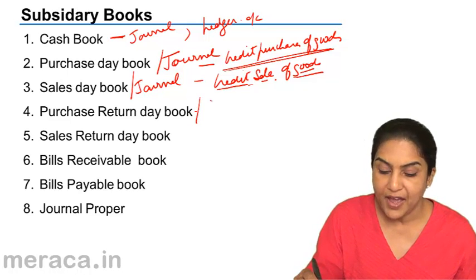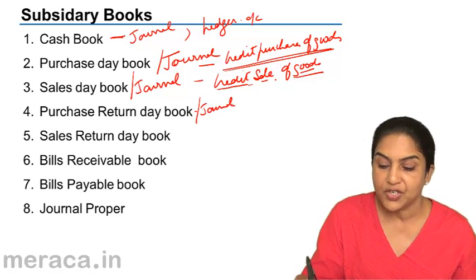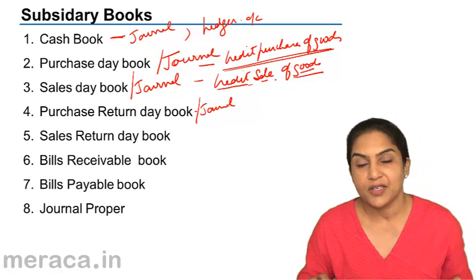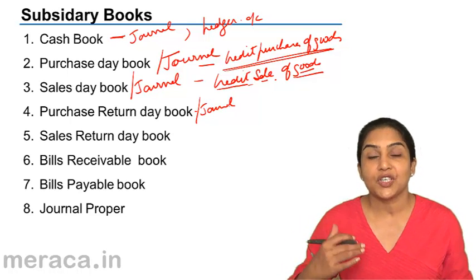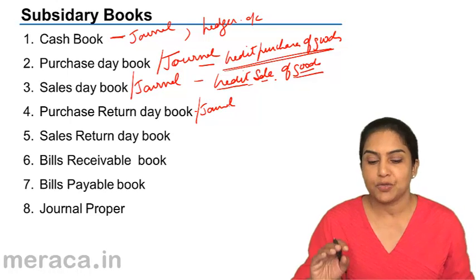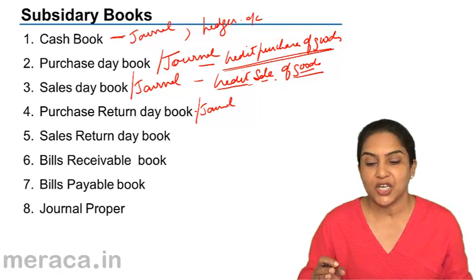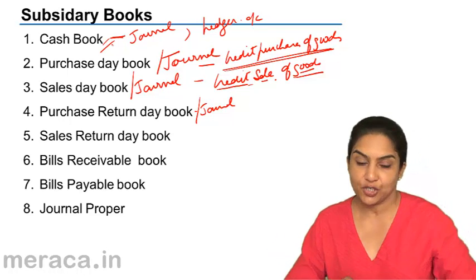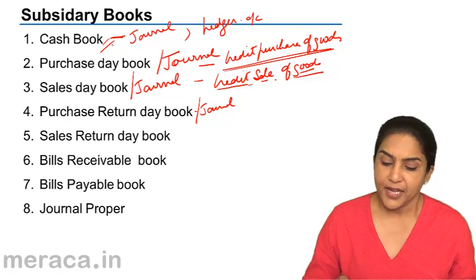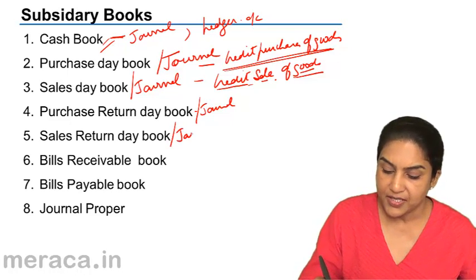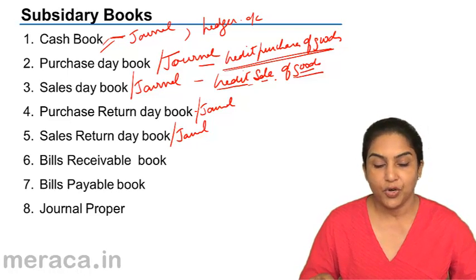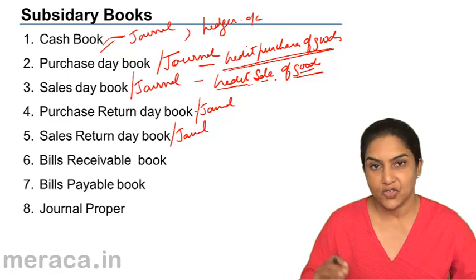Similarly, we may have a purchase return day book, or purchase return journal, where all purchase returns are recorded. These are of course purchase returns on credit. Suppose there is a purchase return and cash has to be paid — in that case it will be entered in the cash book, since all cash transactions are recorded there. Next, we have a sales return day book, or sales return journal, where all credit sales returns are recorded.